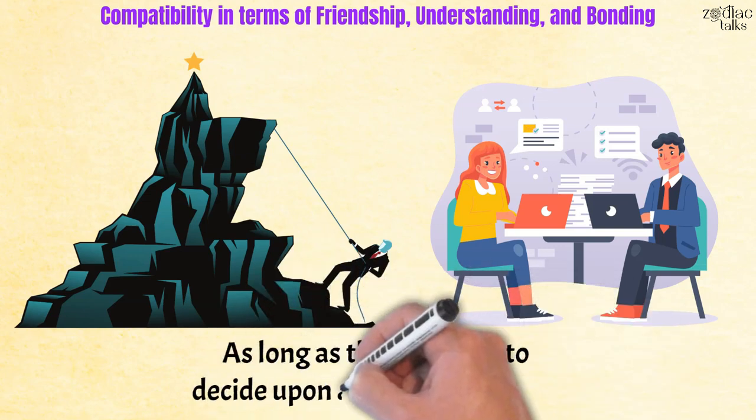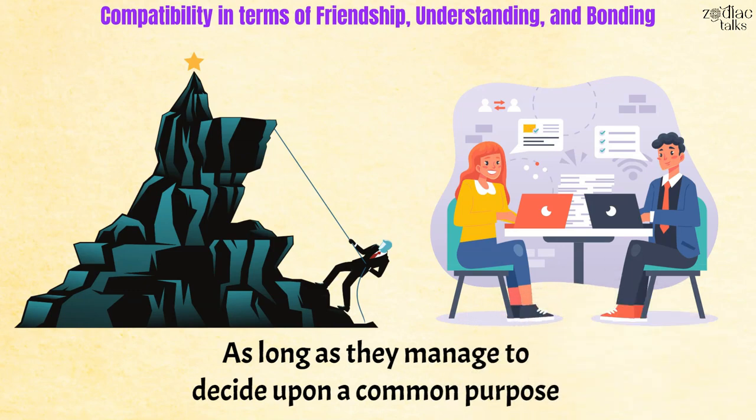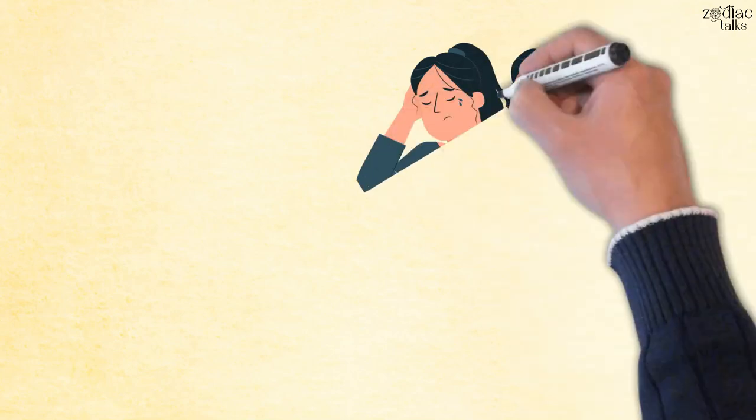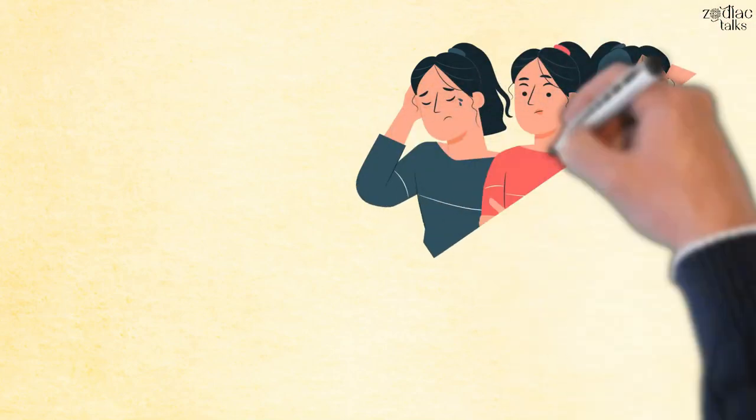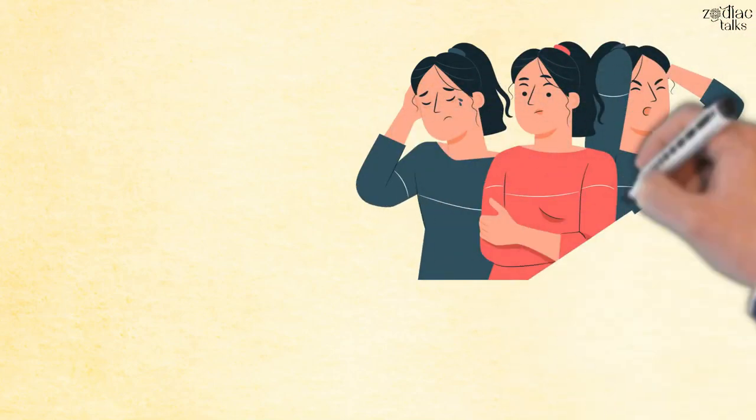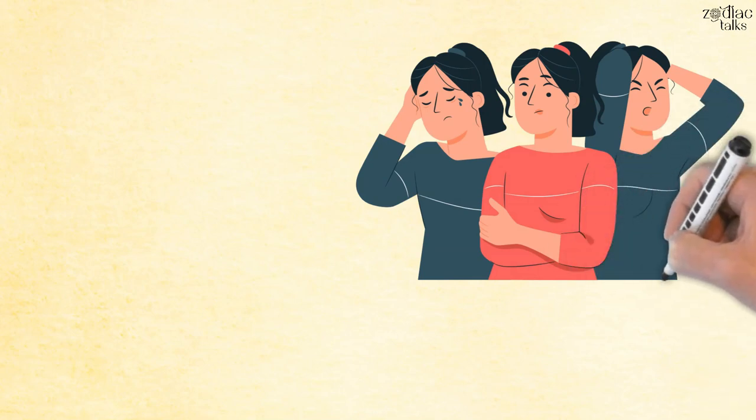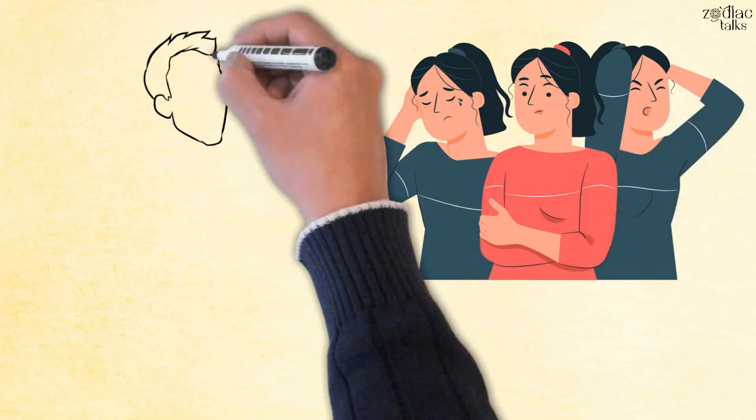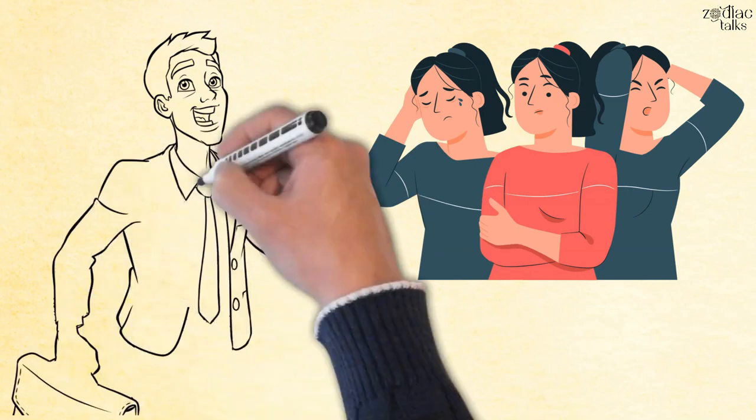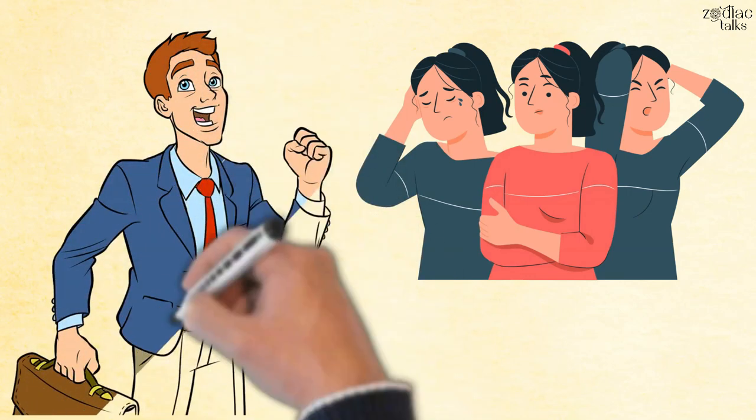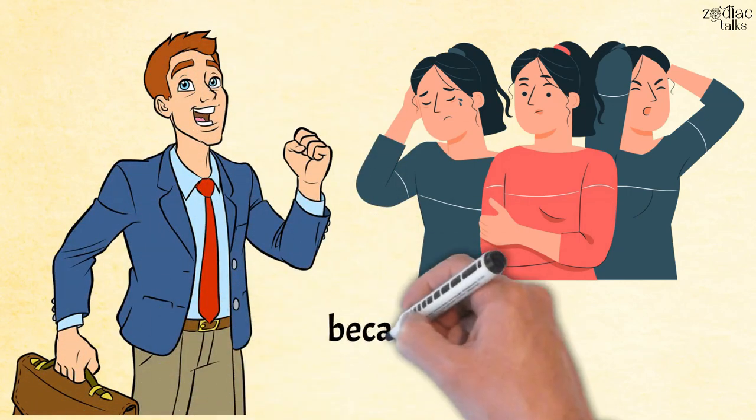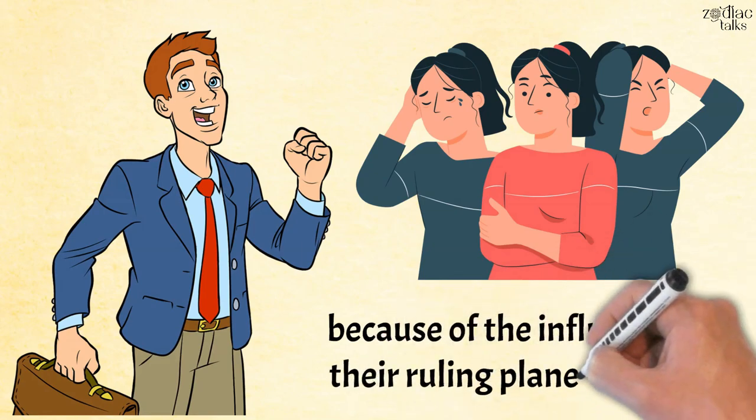As long as they manage to decide upon a common purpose, they are unstoppable. Of course, it's important for both to understand each other's communication styles. While Capricorn women tend to be more reserved and have a hard time expressing their feelings, Taurus men are usually more expressive as they have a better connection with their emotions because of the influence of their ruling planet, Venus.